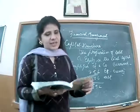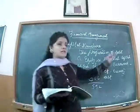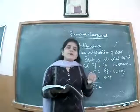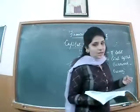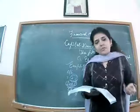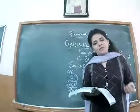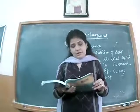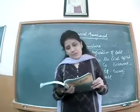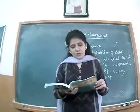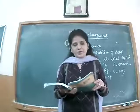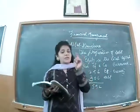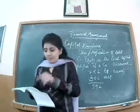Since the lenders earn an assured return — for example, 10% debentures means every year I will get 10% interest, or 5% from bank — they will be paid interest regularly and the principal amount will be repaid. Since the lenders earn an assured return and repayment of capital, they require a lower rate of return. Additionally, interest paid on debt is a tax-deductible expenditure.